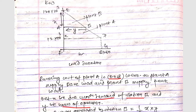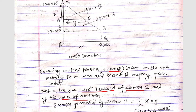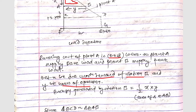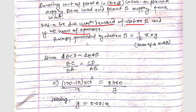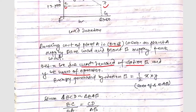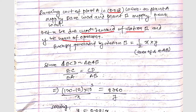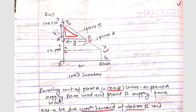Let X be the maximum demand of station B and Y be the hours of operation. For the energy generated by station B, we use the area of triangle EAB, which equals ½ × X × Y. Triangles ECD and EAB are similar triangles, so we apply: EC/EA = CD/AB. From this, EC equals (120 − X) × 10³.